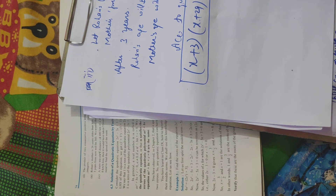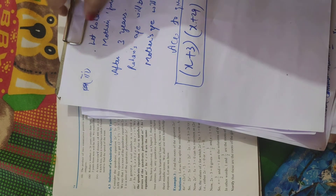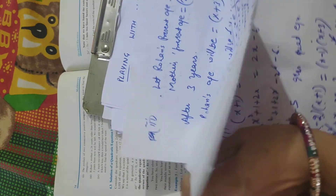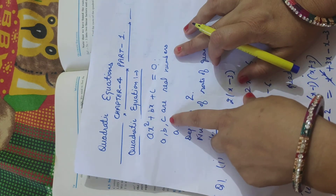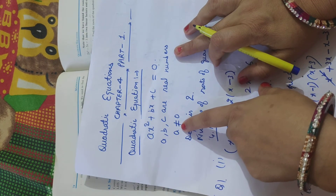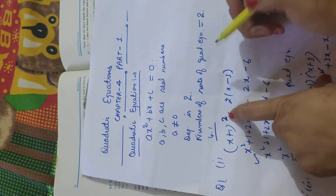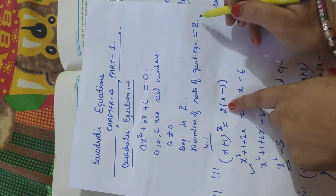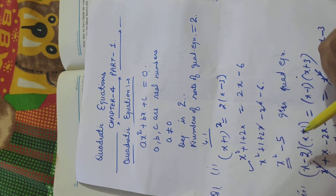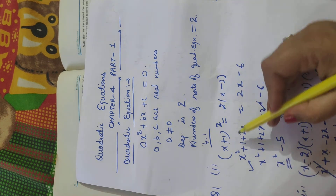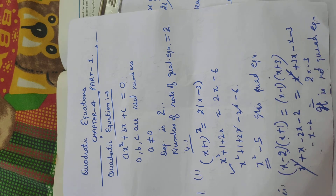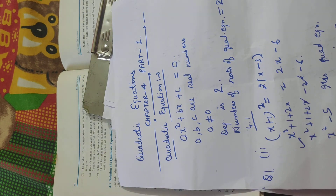So today we have learned what a quadratic equation is: an equation of higher degree 2 with general form ax squared plus bx plus c equals 0, where a, b, c are real numbers and a is not equal to 0. Since the degree is 2, it has two roots. We solved Exercise 4.1, checking which equations are quadratic based on their degree, and represented real-life situations as quadratic equations. Part 4 is homework.